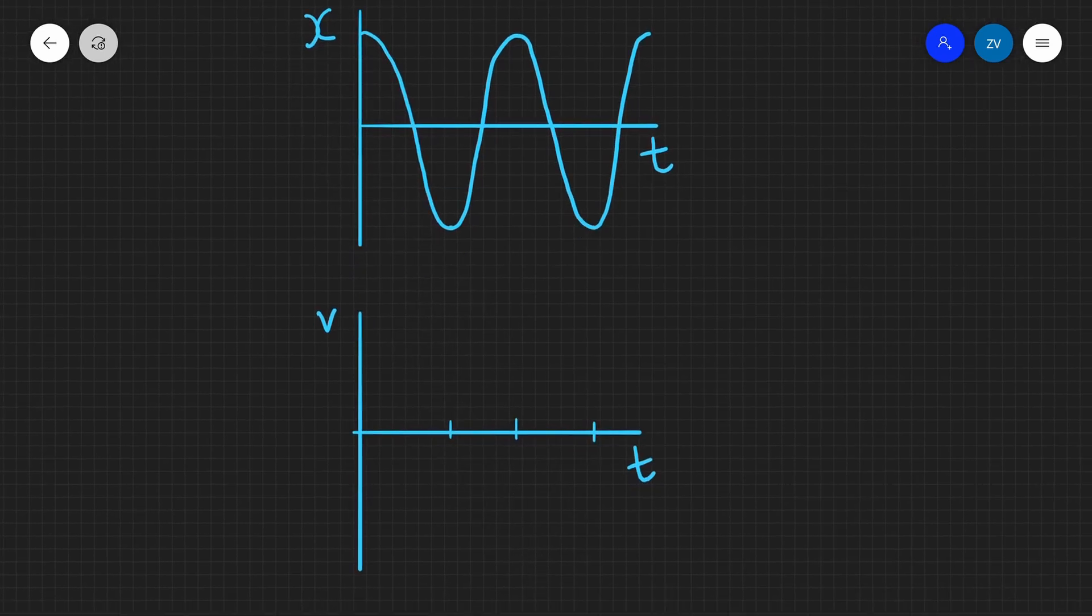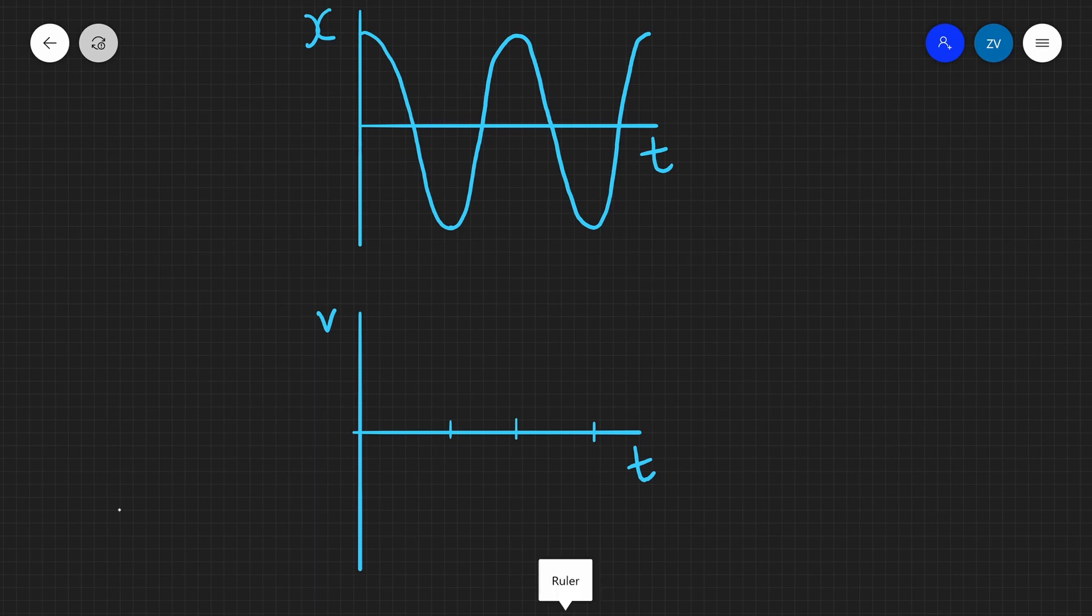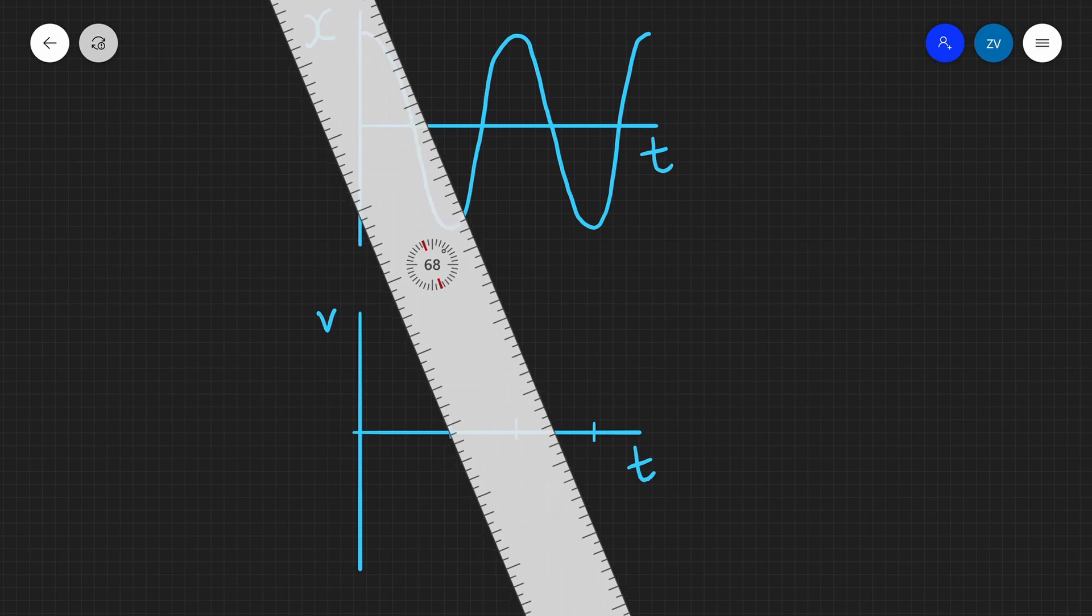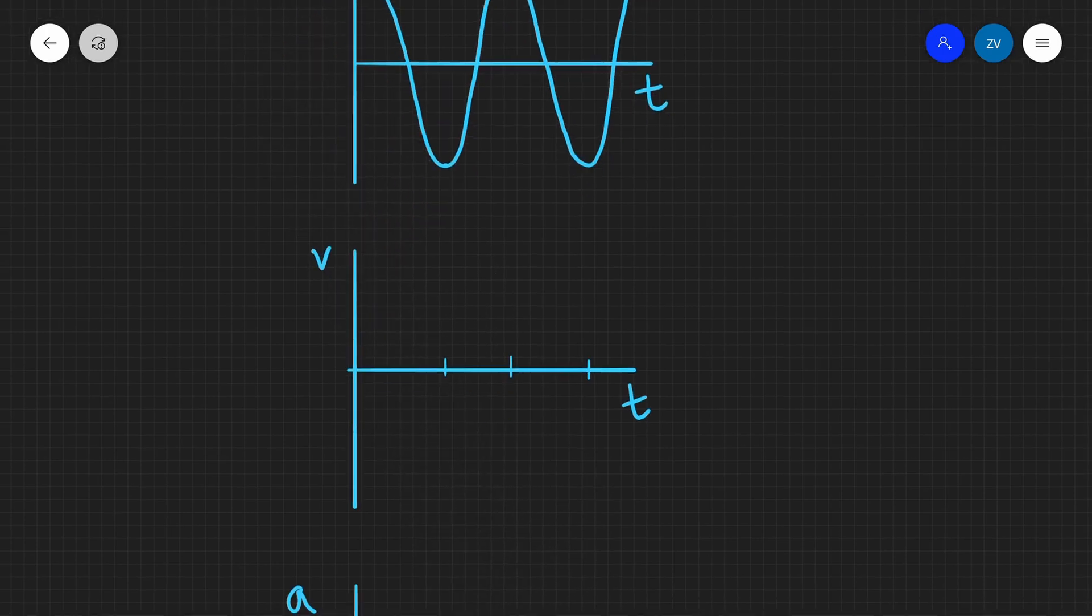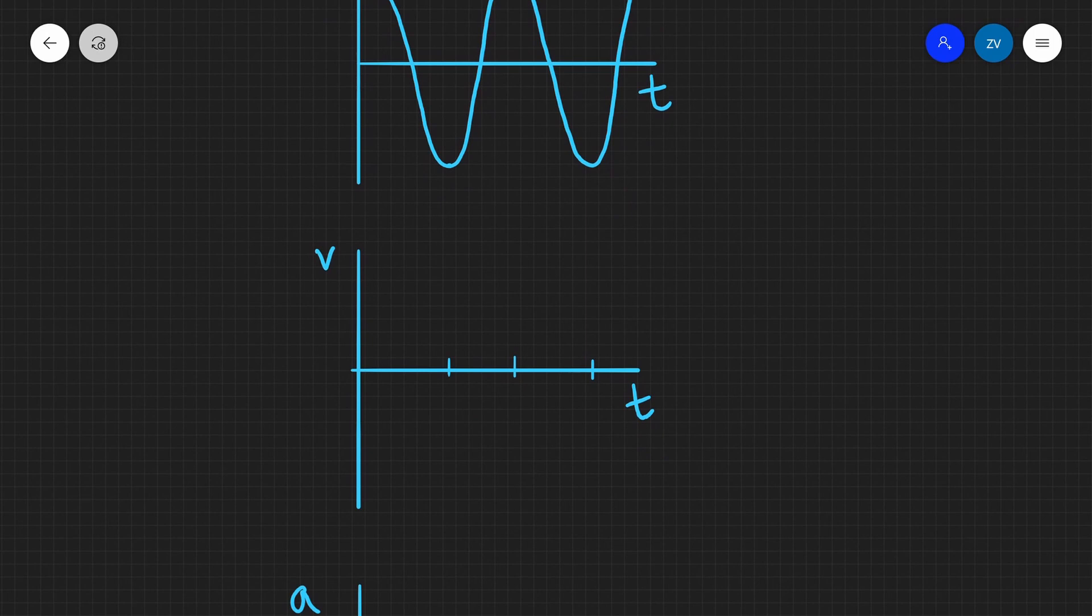So for that first bit, we can see that the tangent in the x against t graph is going down. So I'm going to start off in that negative portion. And so it's going to retain exactly the same shape. However, it's going to be negative. Let's try it again. So it will look like this.